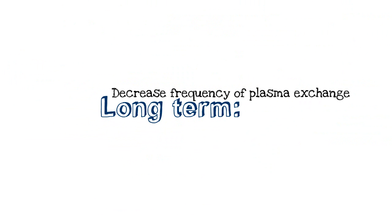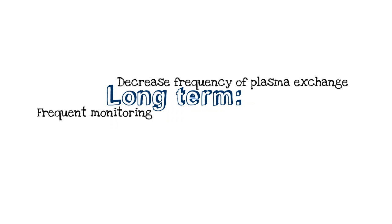In terms of long-term care and transitioning people out of the hospital, we start decreasing the frequency of the plasma exchange to see if their counts stabilize, and then we do frequent monitoring, because people with TTP-HUS can develop chronic kidney disease, as well as relapses and recurrence.